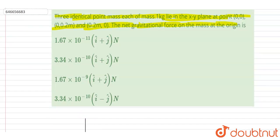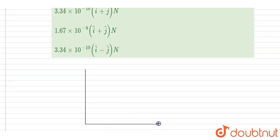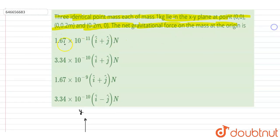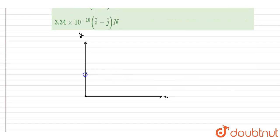So if I draw the x and y axis, one of the masses is at the origin. And if you see, the other two have coordinate (0,0.2), let's say here, and the other is (0.2,0).